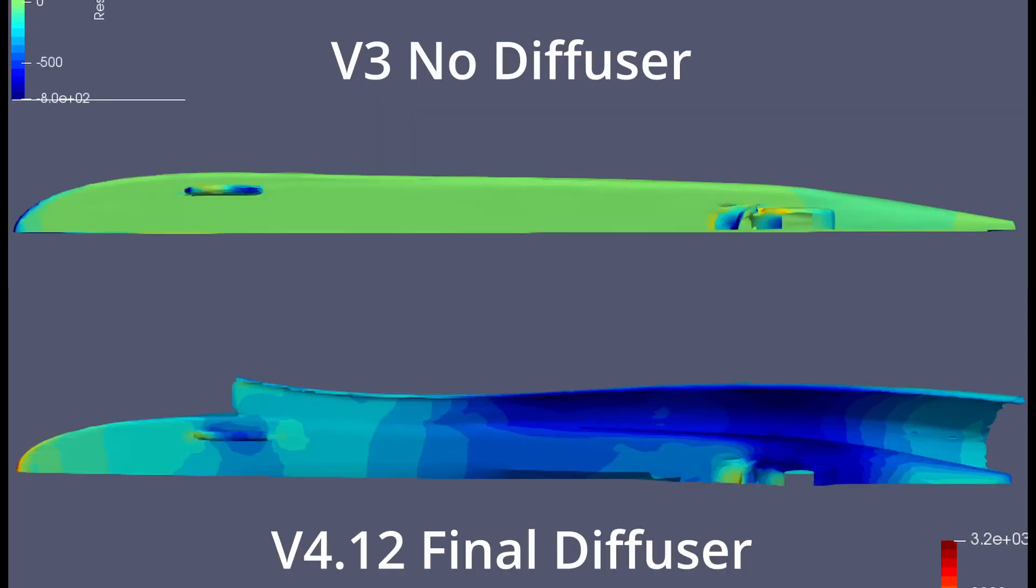So, now it stands at roughly double the initial drag figures that I have with no diffuser, but it has 30 times as much downforce, and the overall lift-to-drag ratio is around 4 to 1, which is pretty decent for something this size.